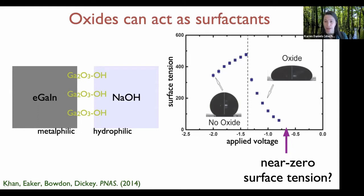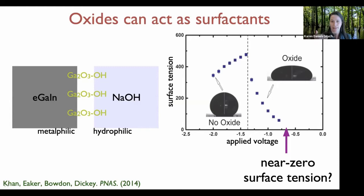Surface tension measurements using goniometry show that as voltage is applied, the surface tension first went up slightly and then dropped precipitously. For EGaIn, which starts at up to 500 mN/m — about ten times that of water — the surface tension dropped to 10% of its original value, and we now know it can go essentially all the way to zero. This is a much more dramatic effect than any surfactant in a water-based system.